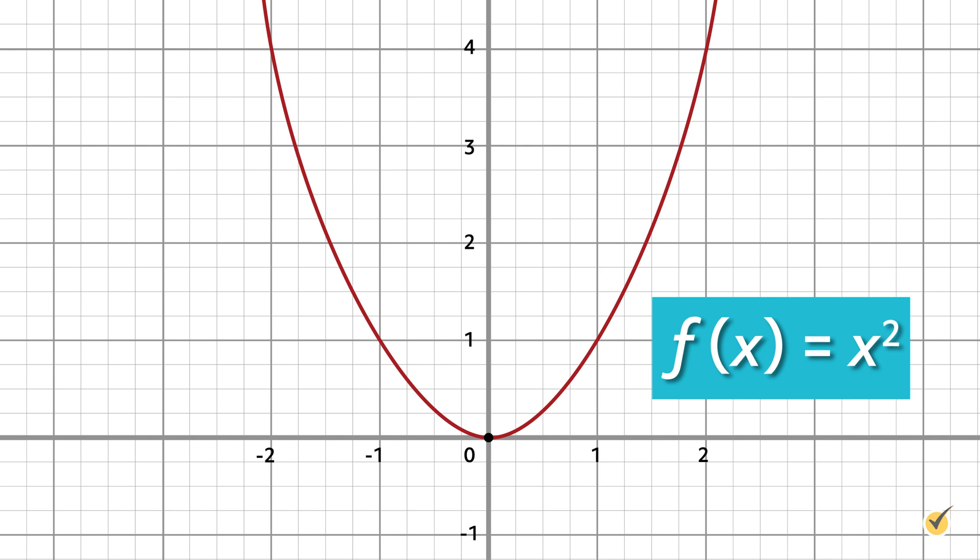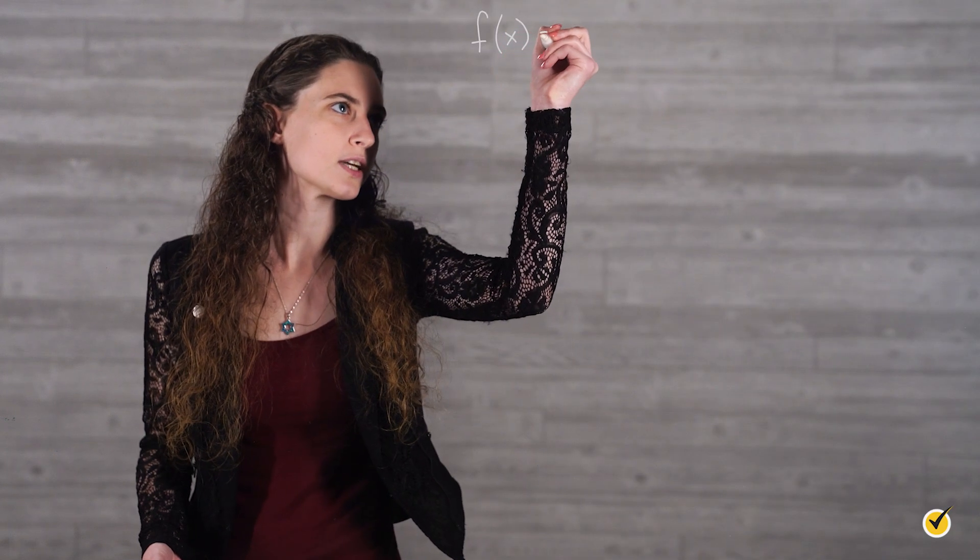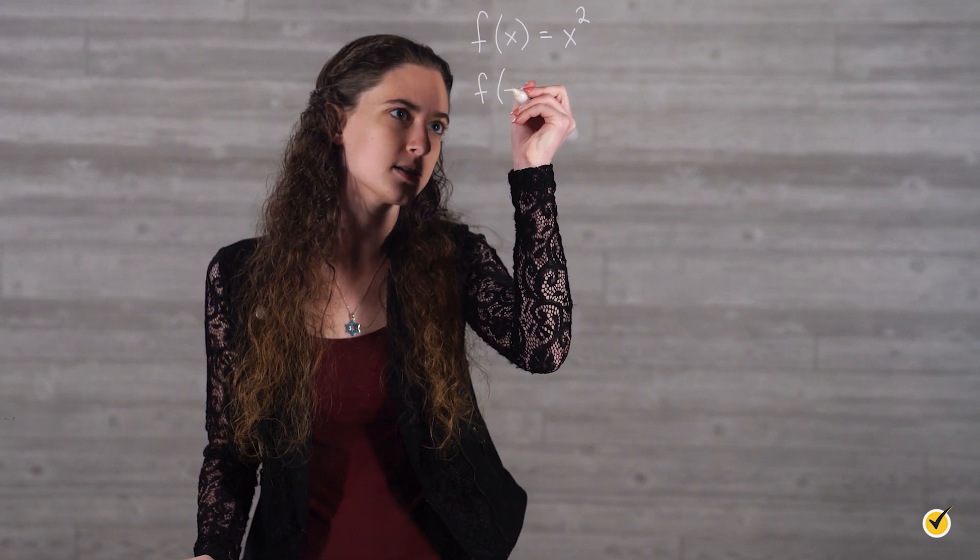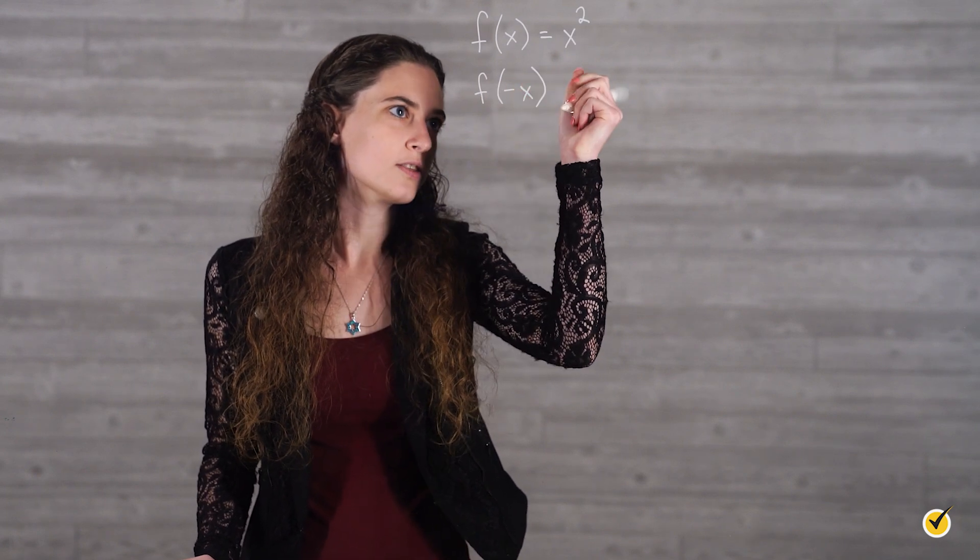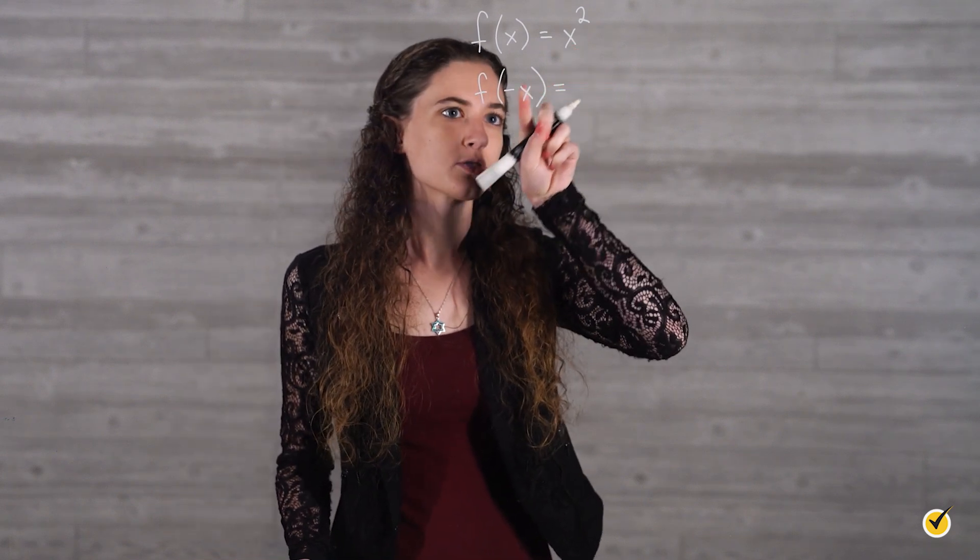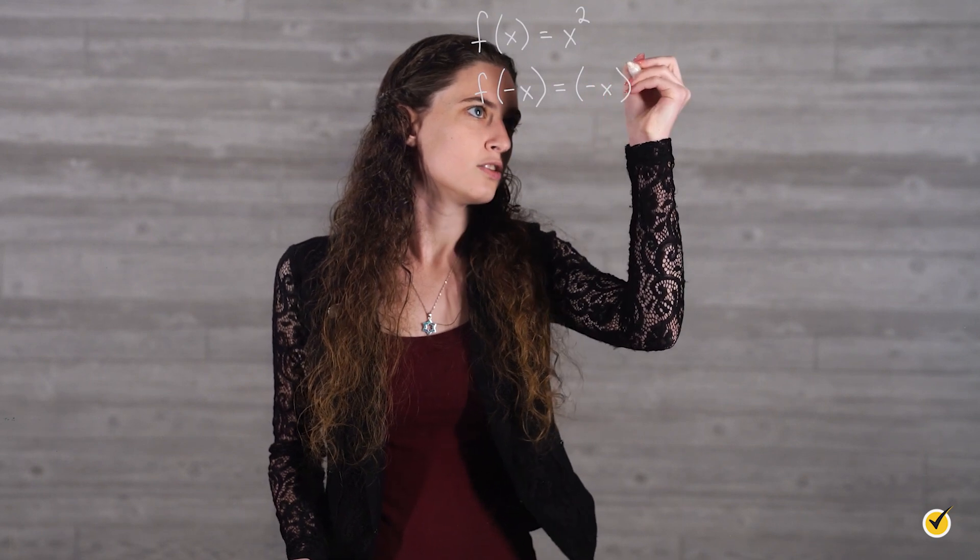We can also show that this function is even algebraically by evaluating at negative x. So our original function is f equals x squared. And we said that if f(-x) is the same as f(x), then the function is even. So let's evaluate at negative x. Wherever there's an x, we're going to plug in negative x. So we have negative x squared.